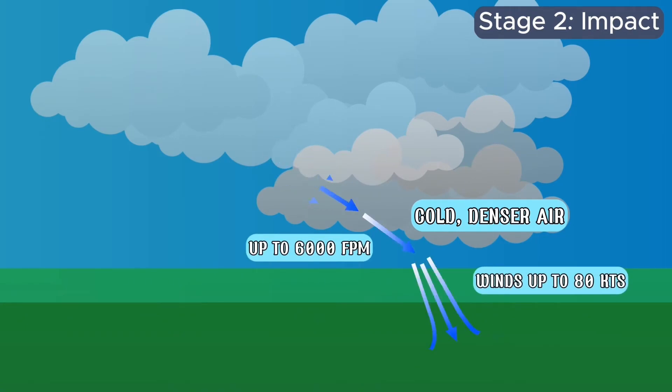Downdraft speeds can reach over 6,000 feet per minute in this stage. Surface wind speeds can reach speeds over 80 knots.